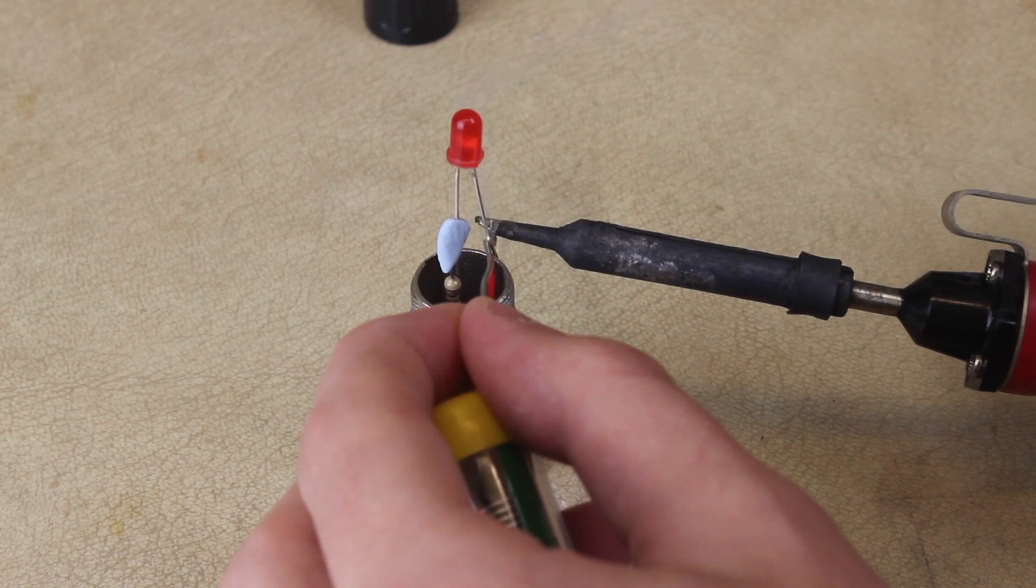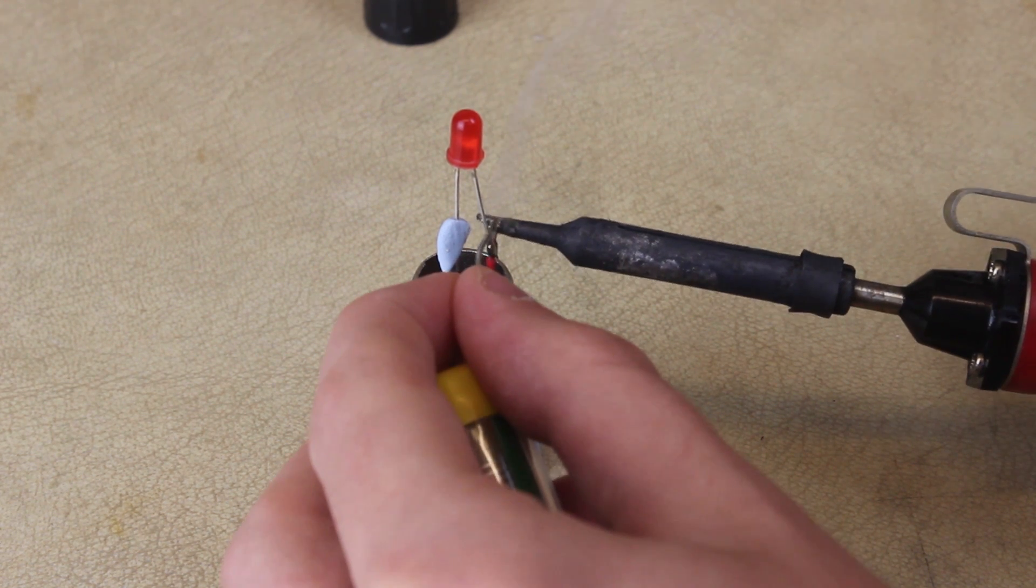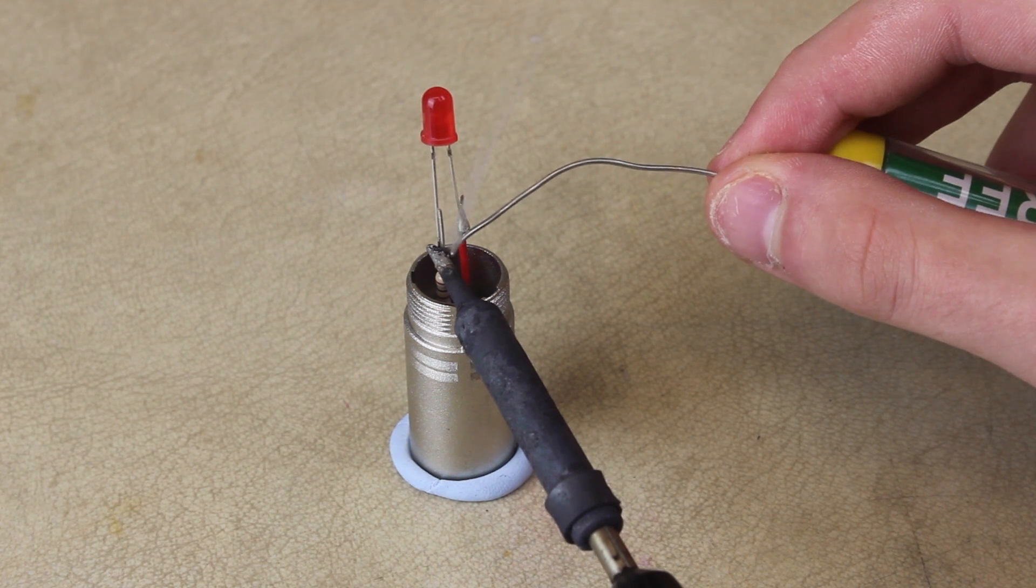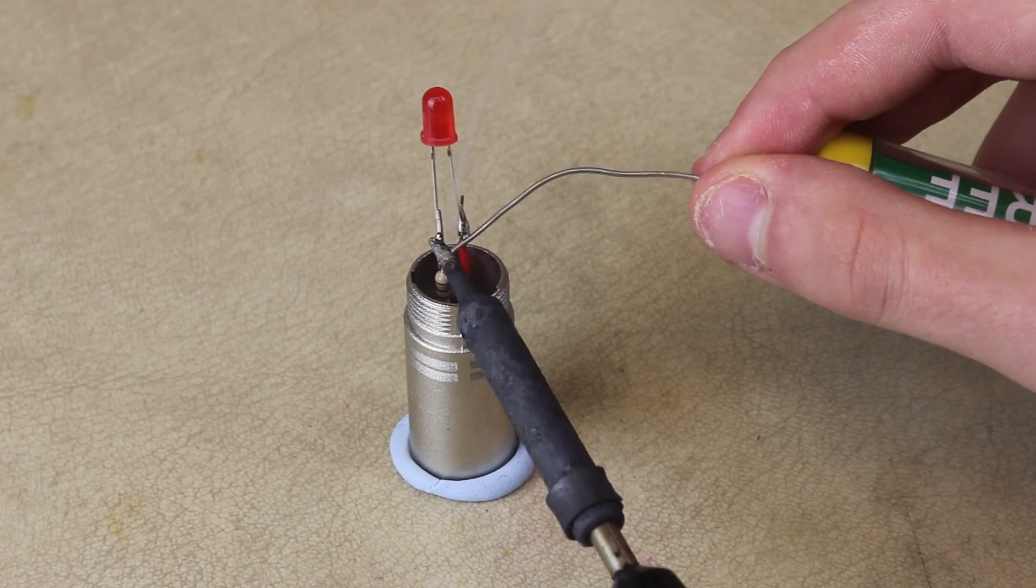So then we can solder on the LED making sure the positive and negative are connected the right way round. The positive side, called the anode, has a longer leg, and the negative side, the cathode, is the shorter leg. We want to have the anode connected to the resistor and the cathode connected to our wire.